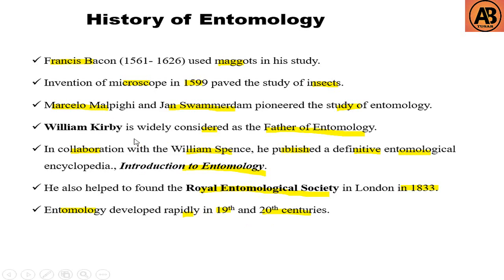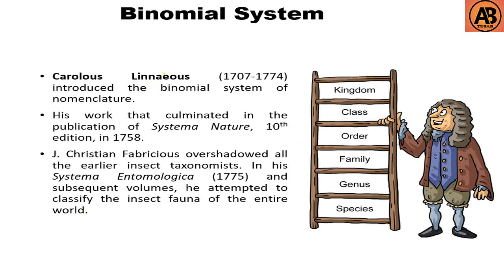Now I am going to tell about the binomial system. Carolus Linnaeus is the father of the taxonomic binomial system. He introduced the binomial system of nomenclature, and his work culminated in the publication of Systema Naturae, 10th edition, in 1758. Christian Fabricius overshadowed all the earlier insect taxonomists; in his Systema Entomologiae (1775) and subsequent volumes, he attempted to classify the insect fauna of the entire world.